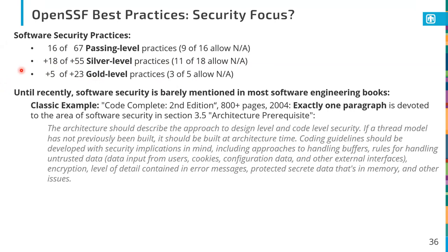Until recently, software security was barely mentioned in most software engineering books. My favorite book on software engineering, Code Complete Second Edition — published in 2004, over 800 pages — has exactly one paragraph devoted to software security: in section 3.5 under architecture purposes, it says the architecture should describe the approach to design-level and code-level security, a threat model should be built at architecture time, and coding guidelines should be developed with security implications in mind, including approaches for handling buffers, handling untrusted data, encryption, error messages, and protecting secret data in memory. It's really just two sentences.